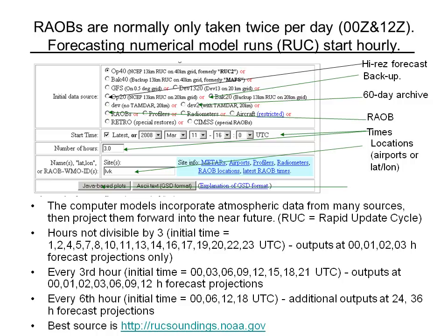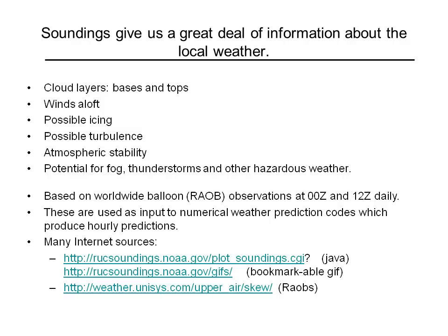That's a lot of forecasts to be starting a computer model every hour. How long they run the computer depends on the hour of the day. For a Zulu time not divisible by 3 — initial times like 1, 2, 4, 5, 7, 8, etc. — the forecast is only run for 3 hours. Every third hour, at 0000, 0300, 0600, 0900, they run the forecast out longer, to 6, 9, and 12 hours. And every sixth hour — at 0000, 0600, 1200, and 1800 Zulu — they run the forecast giving you additional outputs of 24 and 36 hours from the starting point.